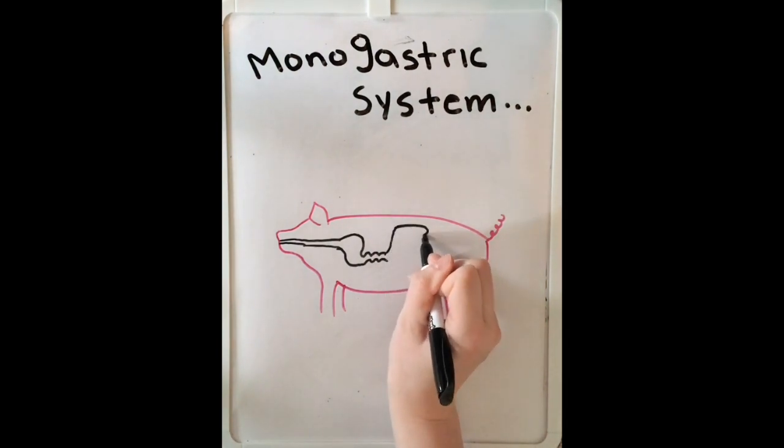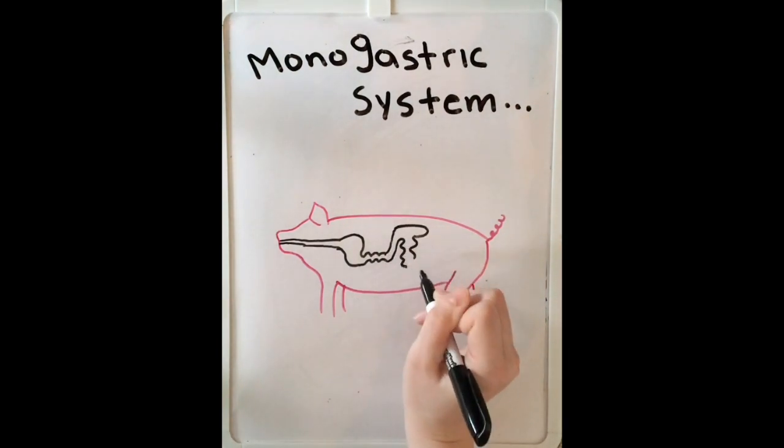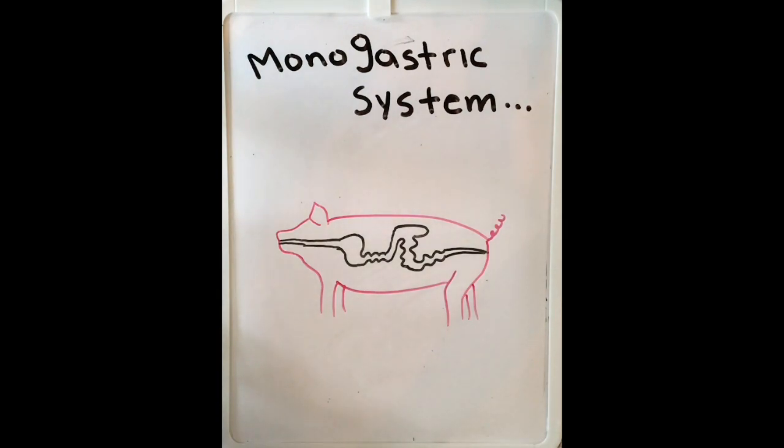A monogastric digestive system works as soon as the food enters the mouth, saliva moistens the food, and begins the digestive process. And as you can see, being drawn out right now is the pig's digestive system. This digestive system is extremely similar to a dog's.